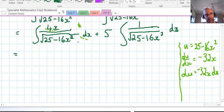So du/dx is negative 32x, so du is negative 32x dx. Let's have a look over here. What we've actually got, we don't have negative 32x dx, we have positive 4x dx. So let's adjust that. We have to divide by negative 8, so negative 1/8 of du.